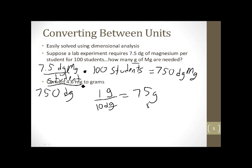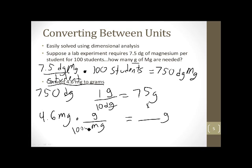Convert 4.6 milligrams to grams. I have 4.6 milligrams and I want grams. So I multiply by grams over milligrams — what I want is grams, what I got is milligrams — and there are 1,000 milligrams in one gram. So I get 4.6 over 1,000. Moving the decimal 3 spots to the left gives me 0.0046 grams.